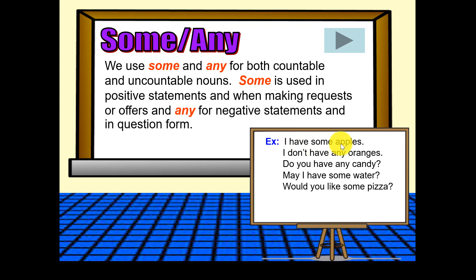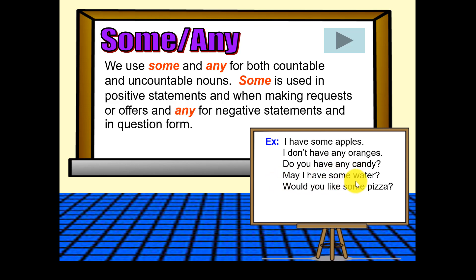These are good examples. 'I have some apples' — positive. 'I don't have any' — for negative statements. 'Do you have any candy?' — that's a question, so we use 'any'. For a request: 'May I have some water?' — 'some' is used here. For an offer: 'Would you like some pizza?' or 'Would you like some tea?' — not 'any tea'.